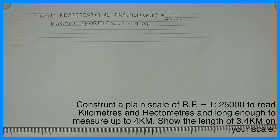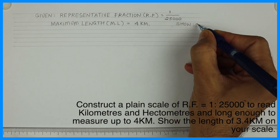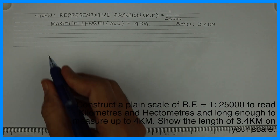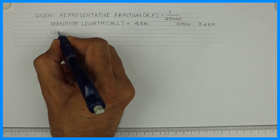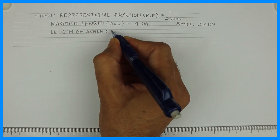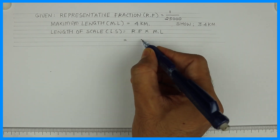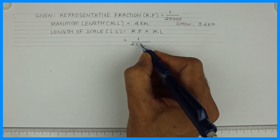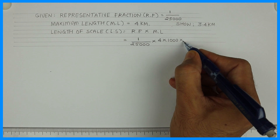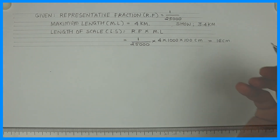We have a formula: length of scale is equal to RF into ML. What we need to show is 3.4 kilometers. So LS is equal to RF into ML, which is 1 upon 25,000 into maximum length 4 kilometers, multiplied by 1000, then multiplied by 100 to give centimeters. When I solve, I get 16 centimeters.